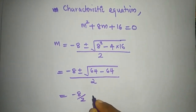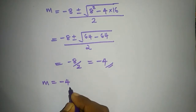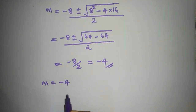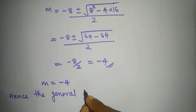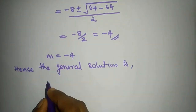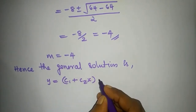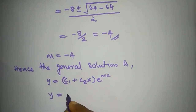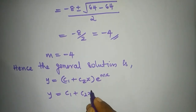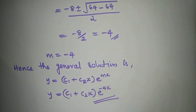This equals minus 8 plus or minus 0, divided by 2, giving us the repeated root m equal to minus 4. So the general solution is y equal to (c1 plus c2·x) times e raised to minus 4x.